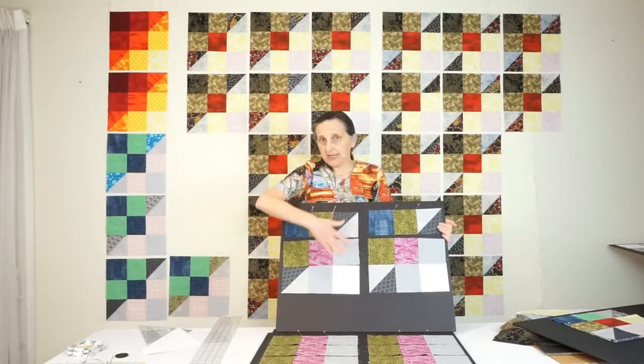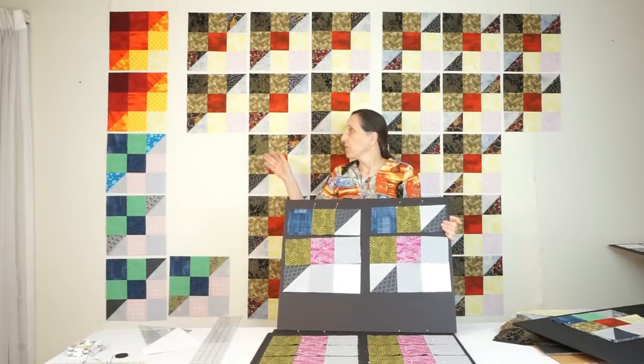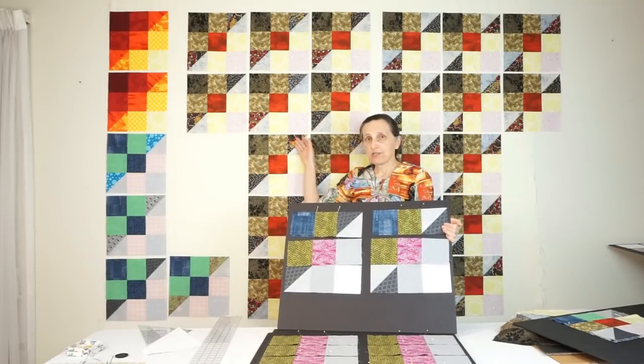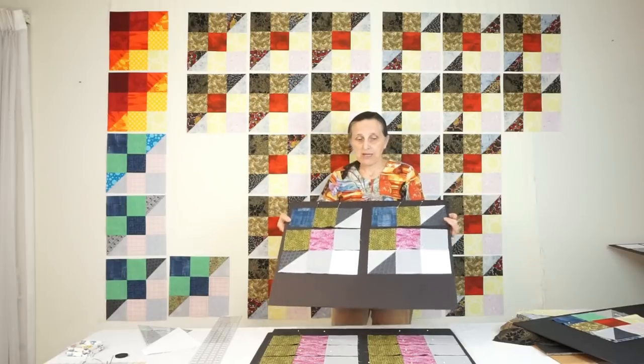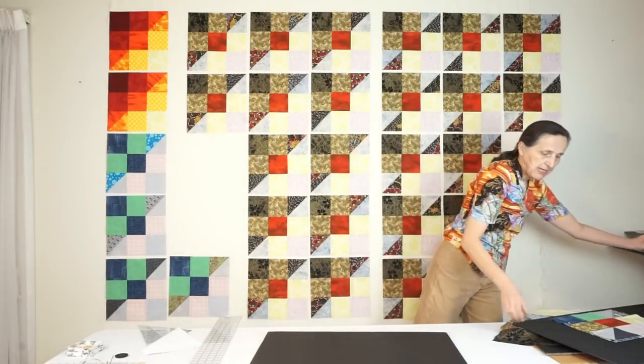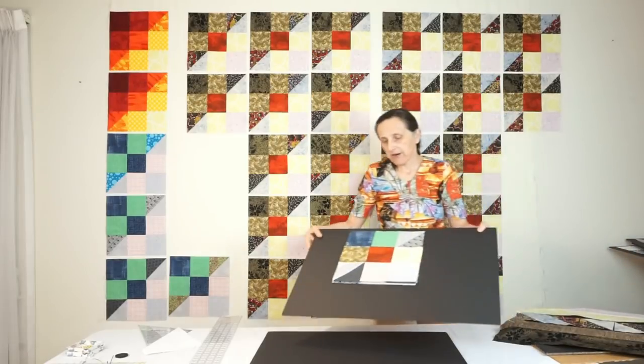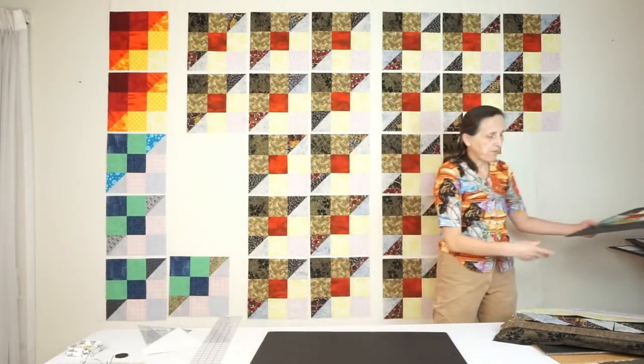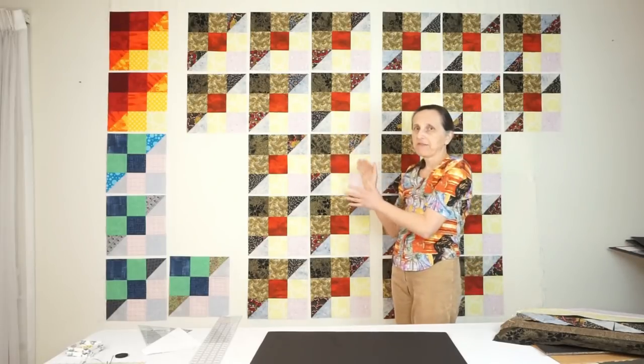Once you sew these blocks together, by design they're a little too big - trim them down to 12 and a half inches so that the blocks will be 12 inches big. If you're making a scrappy look, you can make so much.